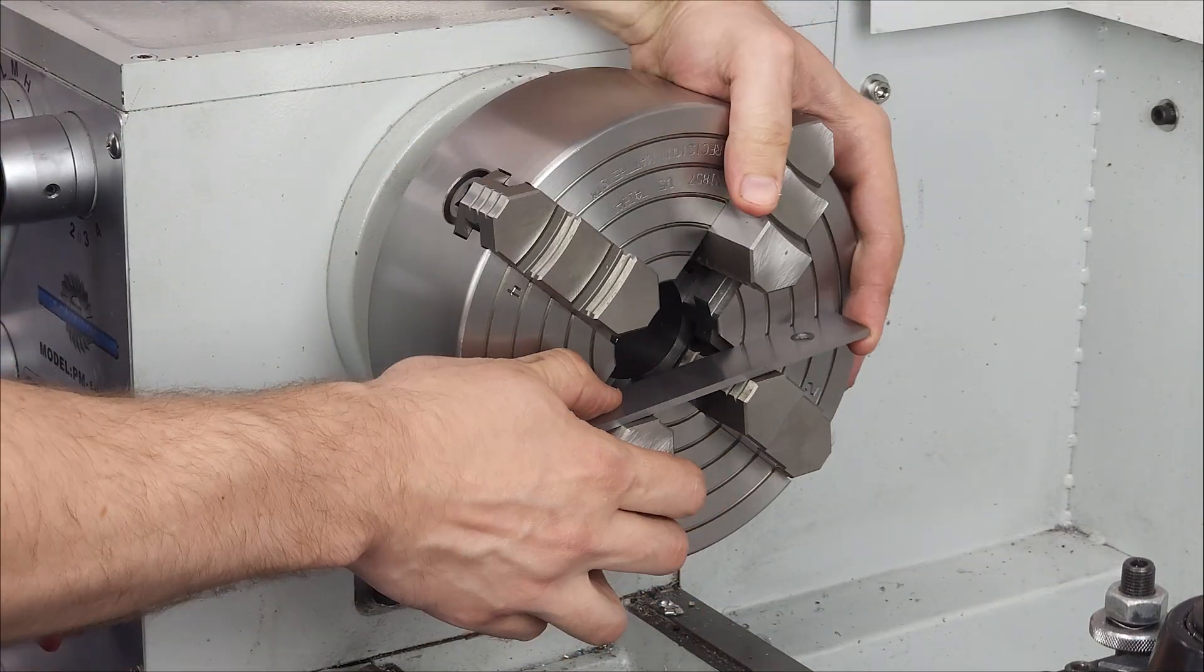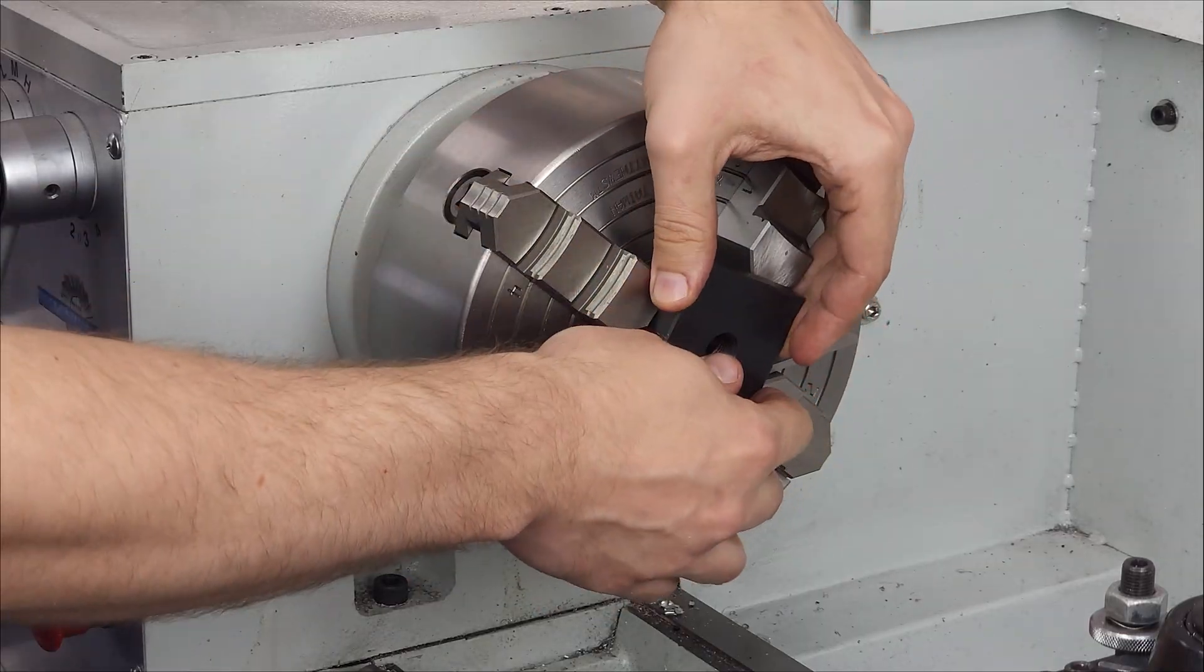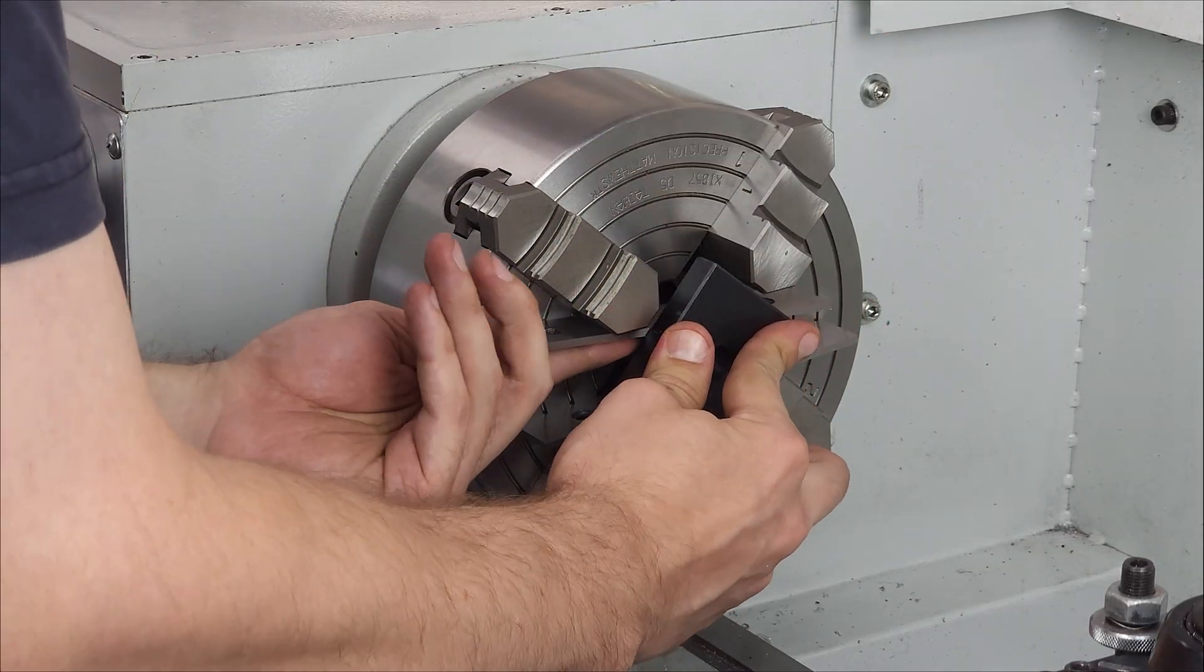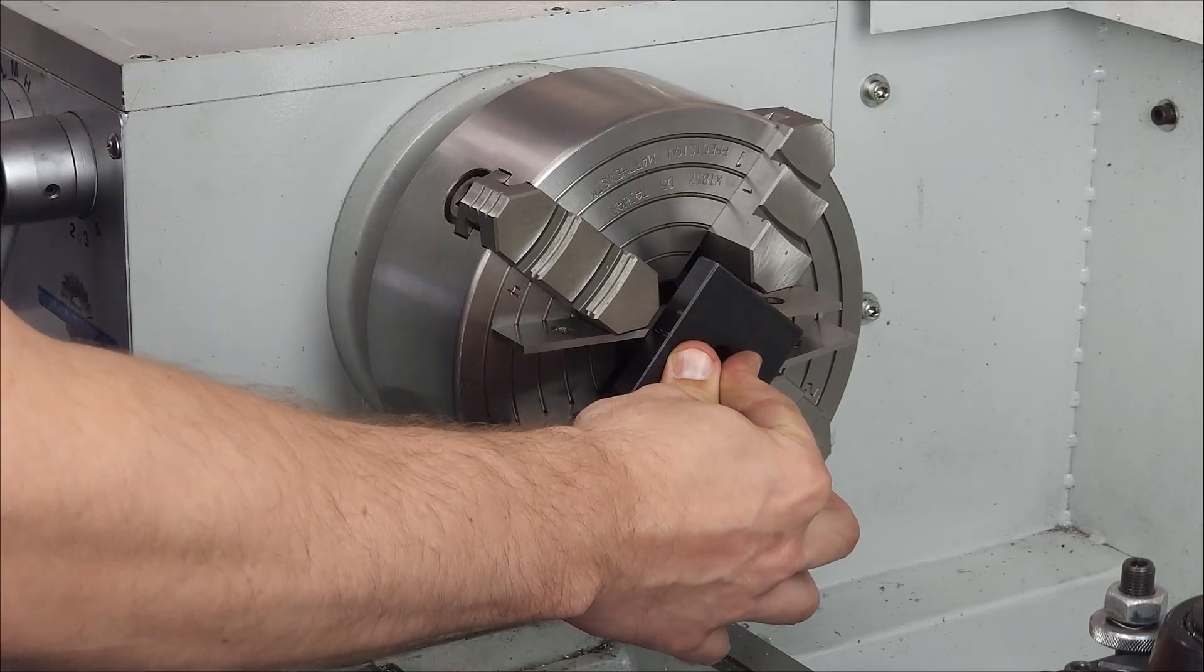If you have a mill, it's a simple two-step process. Step one, measure the T-slot. Step two, make the T-nut. But if you don't have a mill, things are a little more complicated.